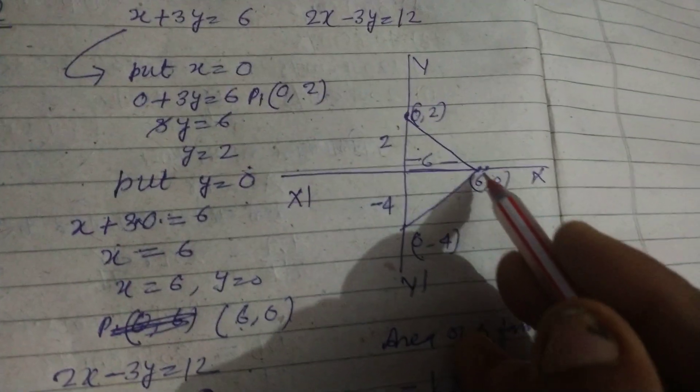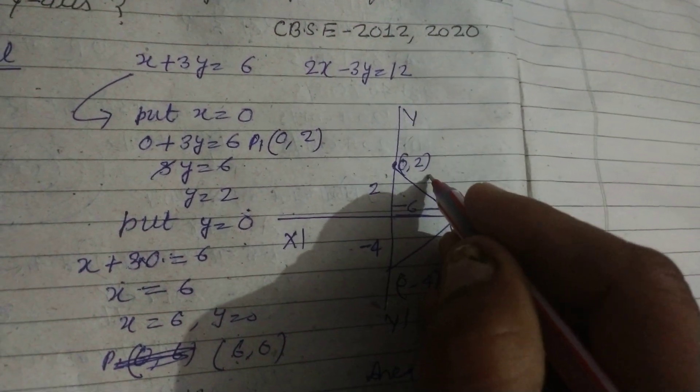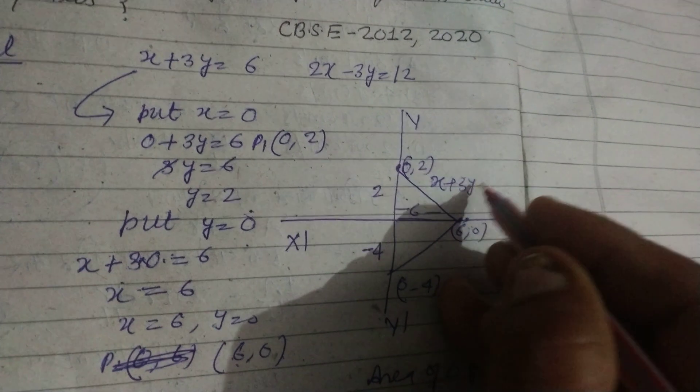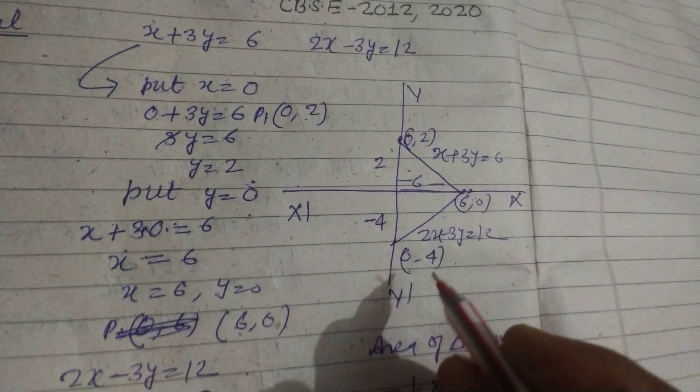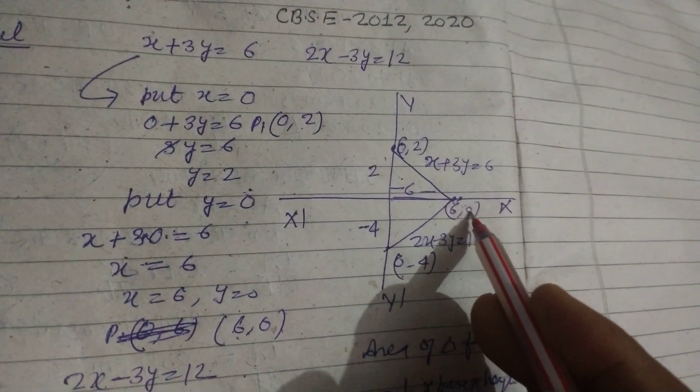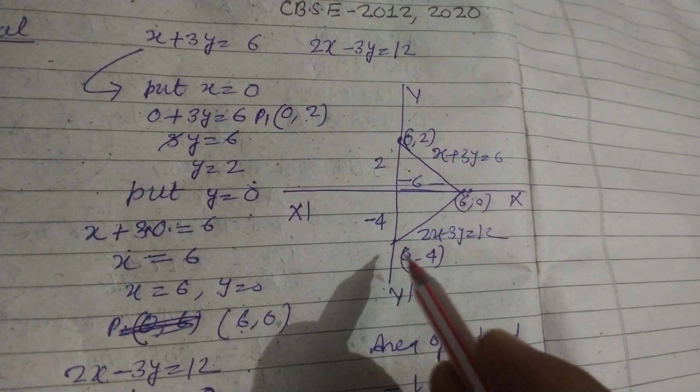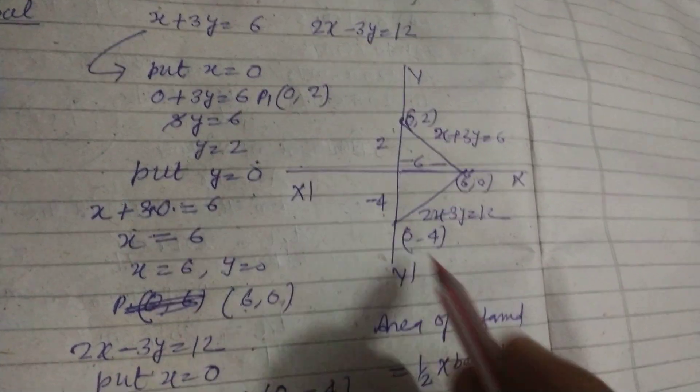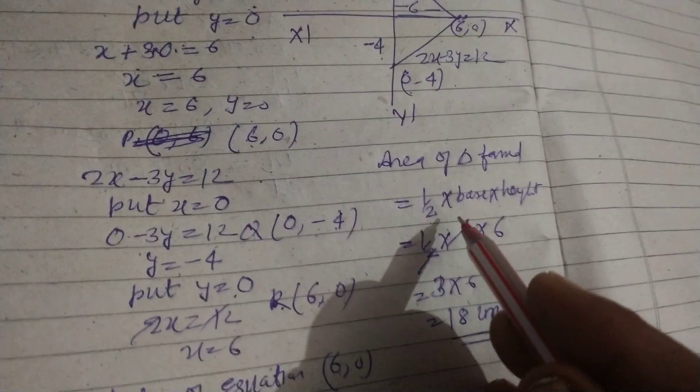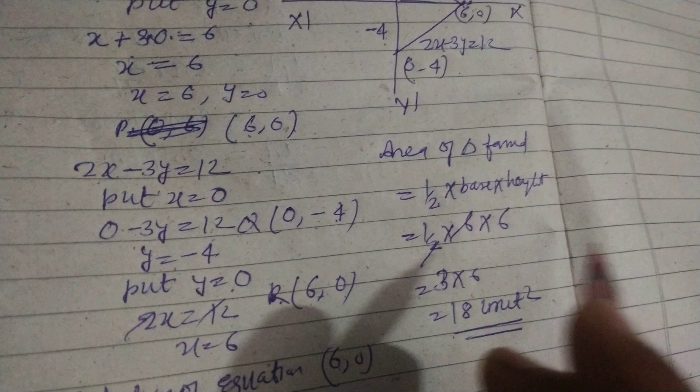This is the intersecting point of the lines. This equation is x plus 3y equal to 6 and this is 2x minus 3y equal to 12. They are intersecting at point 6 comma 0 and the y-axis has length 2 plus 4, which is 6. So area of the triangle is half base into height, 6 into 6, this is 18 unit square.